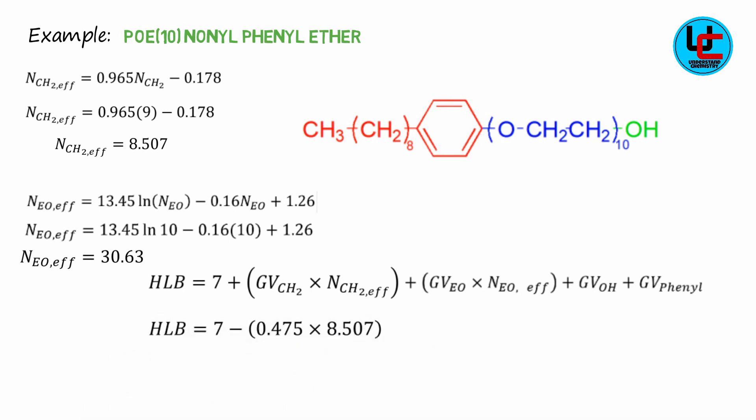By replacing the group values of N-methylene effective and N-ethylene oxide effective and other groups like hydroxyl and phenyl group values, we obtain HLB is equal to 13.27, which was previously 6.2 when we applied Davies formula.